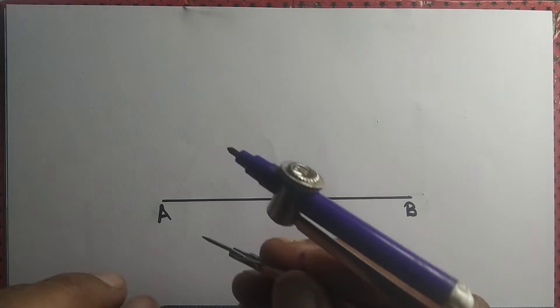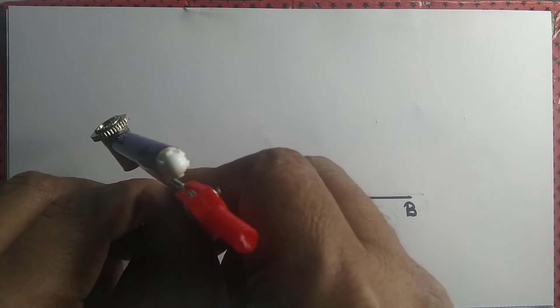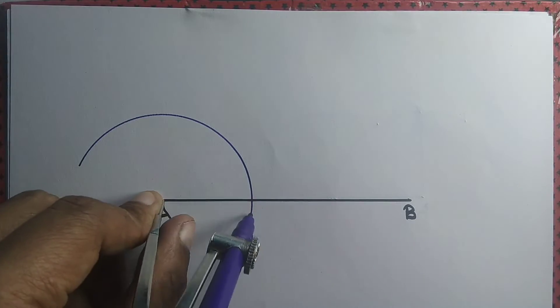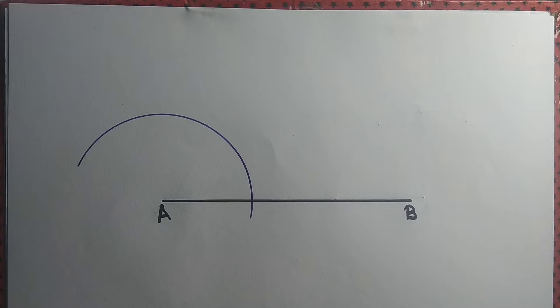From point A we draw an arc. Let's draw a big arc. That arc will intersect AB at some point.